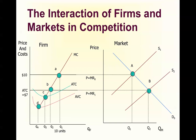Points C and D are important. Point D is the shutdown point. Point C is the breakeven, or the ultimate long-run profit point. We will look at these two points in the next section.